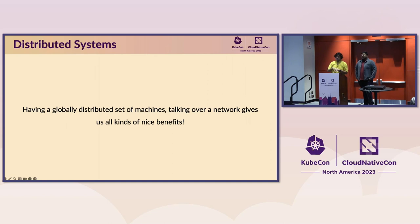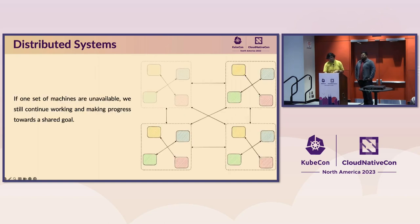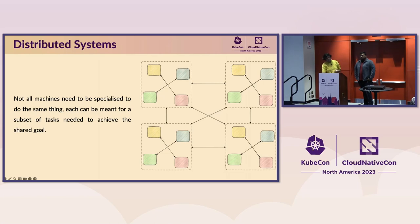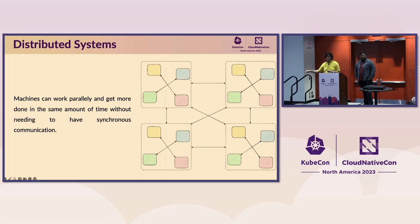Having a globally distributed set of machines talking over a network gives us all sorts of nice benefits. If one set of machines is unavailable, we still continue working towards a shared goal. Not all machines need to be specialized to do the same thing — some can be optimized for back-end code, others for a database store. They can each have their own strengths and communicate asynchronously, sometimes synchronously. Interestingly, synchronous communication is the key to losing scalability of a distributed system — that's called the Universal Scalability Law.